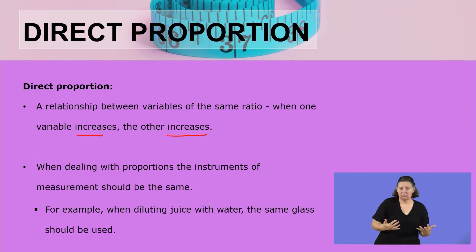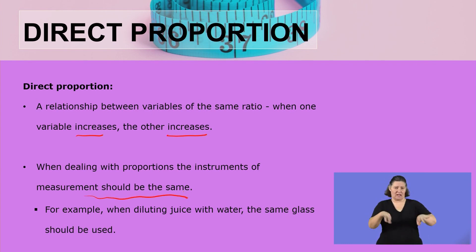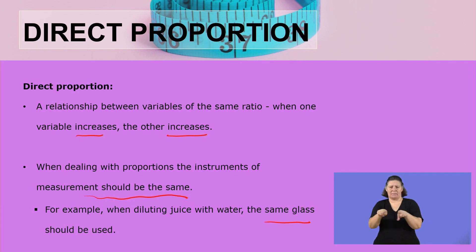What is key when dealing with proportion: the instrument of measurement should be the same if we are measuring the values. For example, when diluting juice with water — the concentrated juice — we need to use the same glass. Because if you are not using the same glass, the comparison will not be fair. For us to say it is proportion, we need to have the same glass.